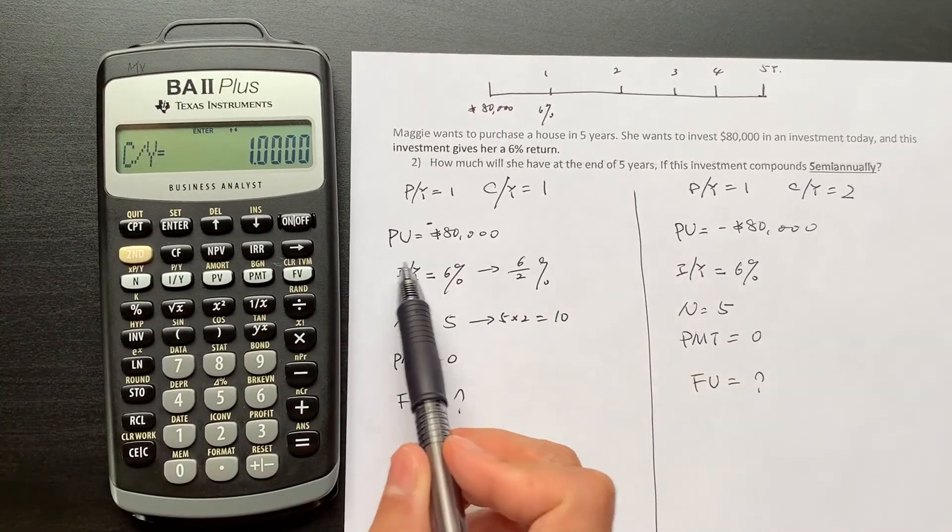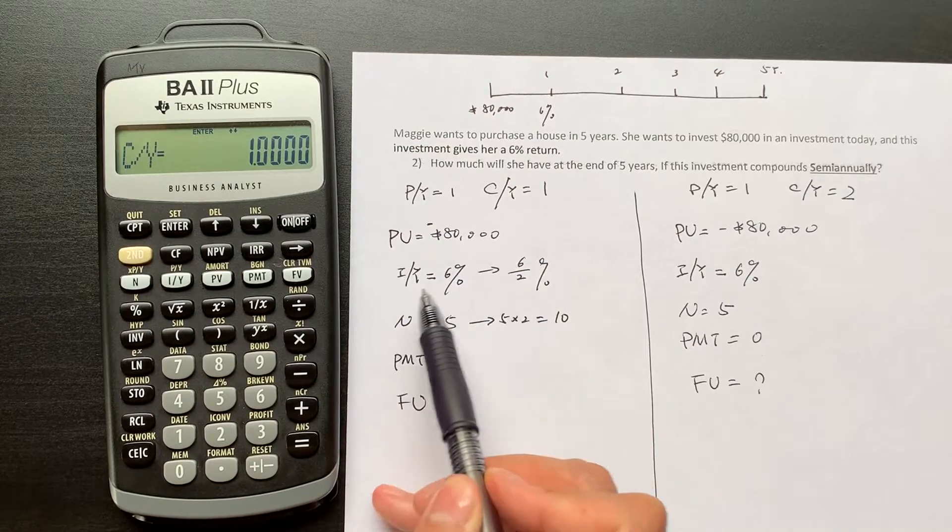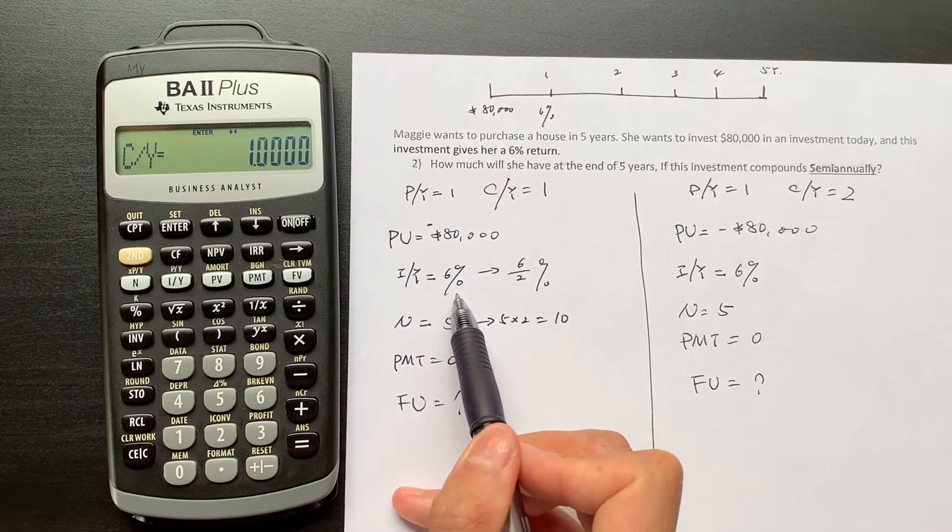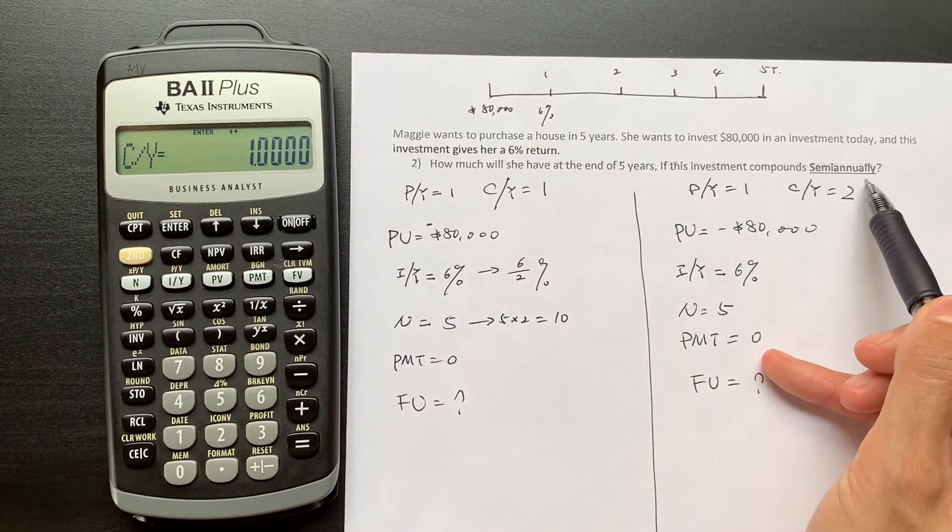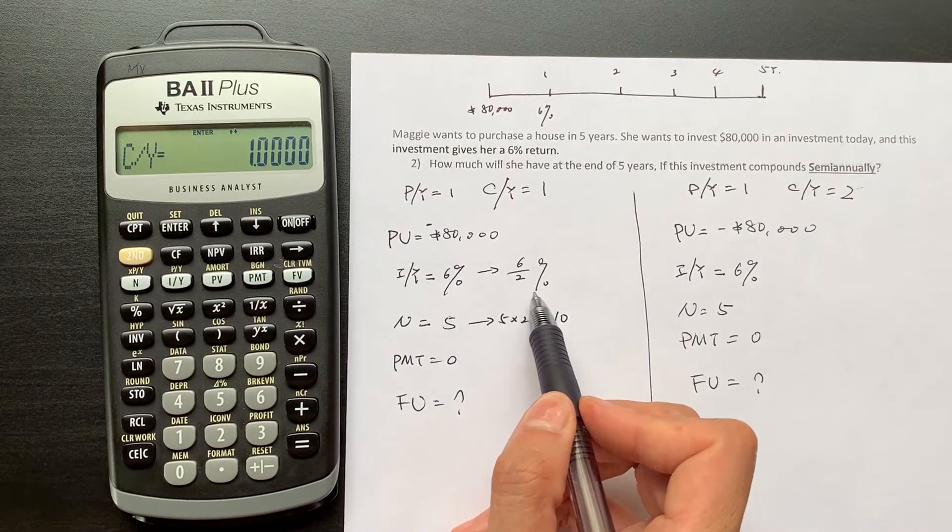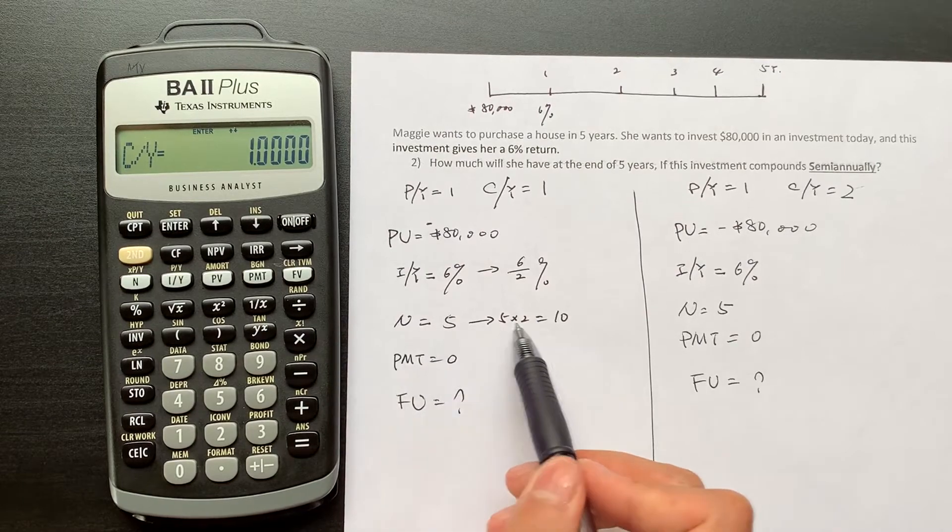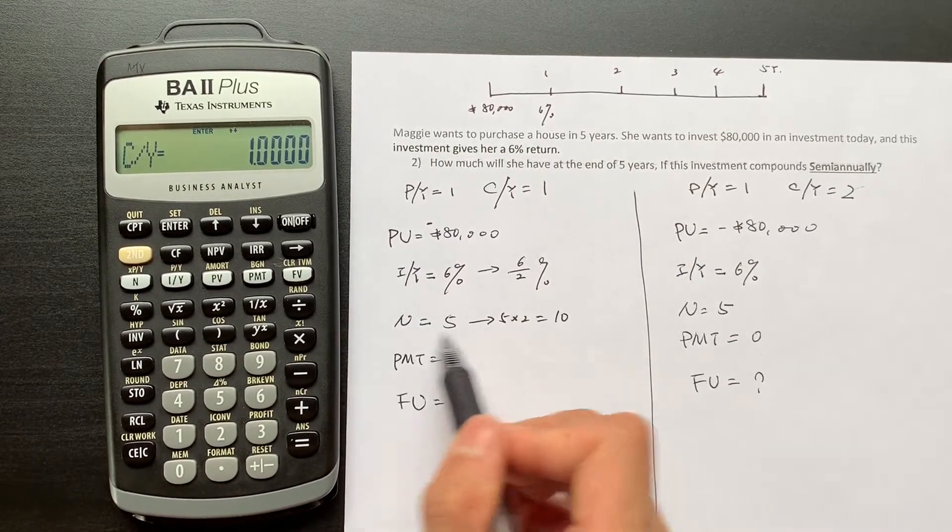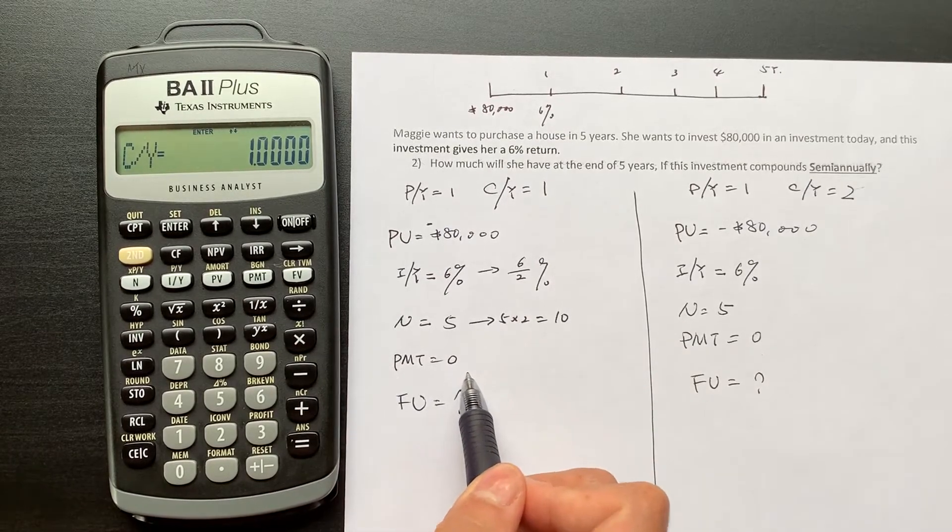You can solve through this way: present value is 80,000 dollars, the interest rate is 6% annually. But if it's compounded semi-annually, you have to divide by two. So if it's five years but they are compounded semi-annually, so N should be 10.